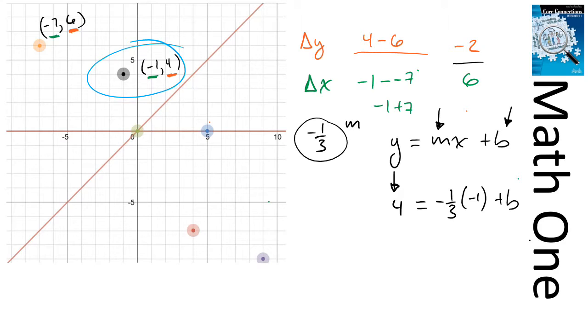My slope is -1/3, and my x value is -1, and then plus b. So I've got -1/3 times -1 is positive 1/3, so this is 4 equals 1/3 plus b. I'm just going to simply subtract 1/3 from each side, and 4 minus 1/3 should be 3 and 2/3.